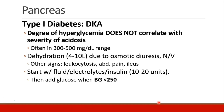In patients with DKA, the degree of hyperglycemia does not necessarily correlate with the severity of the acidosis. Most patients in DKA have a sugar in the 300 to 500 level. These patients become profoundly dehydrated — often 4 to 10 liters of fluid may be needed — due to osmotic diuresis as well as nausea and vomiting. Other signs may be leukocytosis, abdominal pain, and ileus.